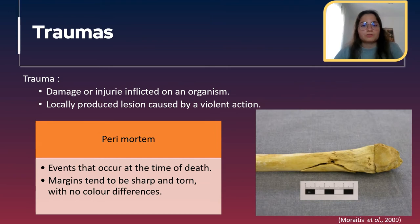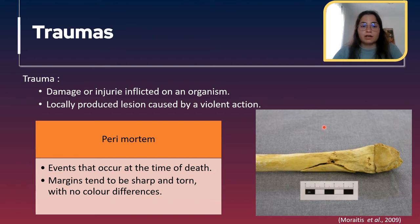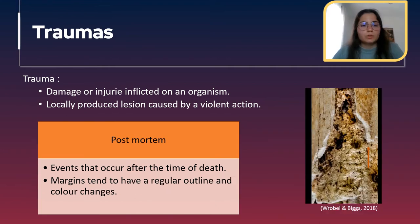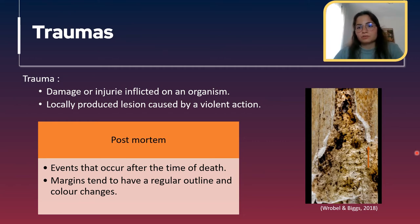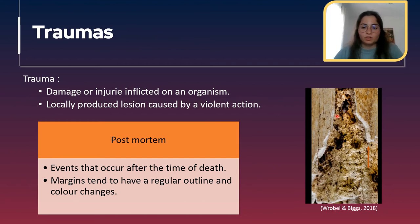Perimortem lesions are the ones that occur at the time of death, and the margins of the lesions are sharp and torn with no color differences in the bone. Here you have a fibula with perimortem lesions — the lines are sharp and there are no differences in bone color. Finally, postmortem means events occurred after death. It's important to know the characteristics of this to differentiate from perimortem. In this case you can see that the margins have a regular outline and there are differences in the color of the margins.